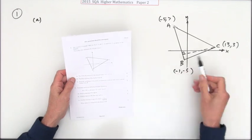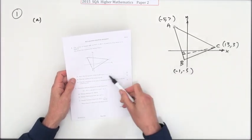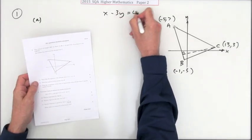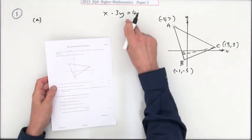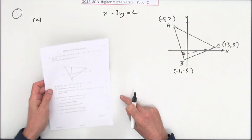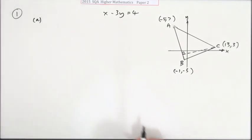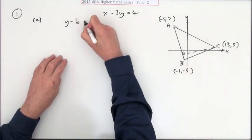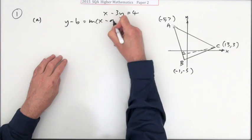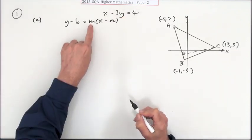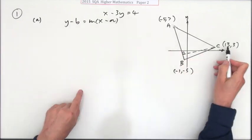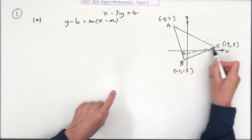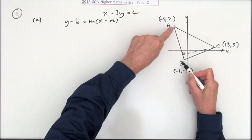The first part says show that the equation of the altitude is given by x minus 3y equals 4. That means you have to end up with it in that form. Well, equation of a line, so that'll be y minus b equals m(x minus a). I need its gradient and I need a point on it. I've got a point on it so I just need its gradient. I can't get its gradient from another point on it, so you get it by reference to the line AB because it's perpendicular.